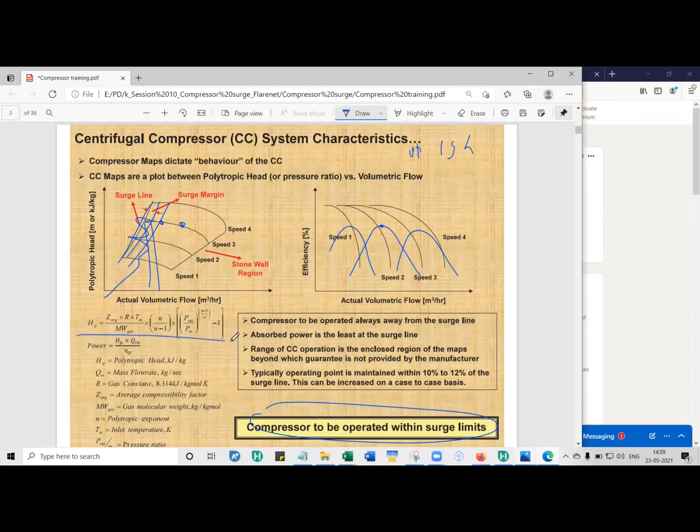As shown here with these two expressions, what we are doing is taking into account the changes in density through the gas compressibility factor, the inlet temperature, molecular weight, polytropic exponent, and the pressure ratio.